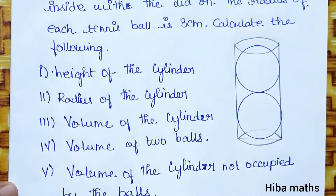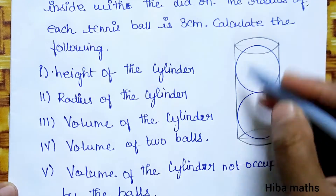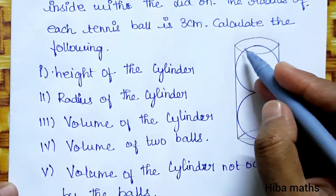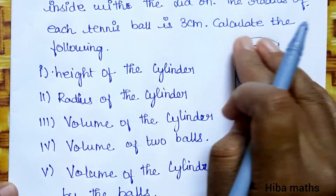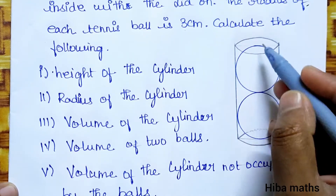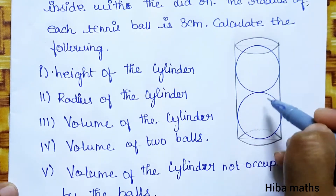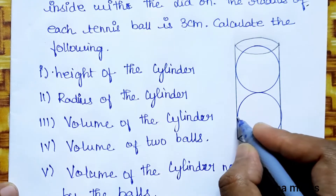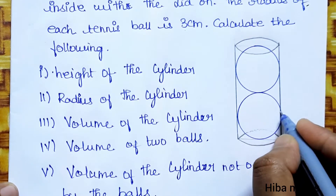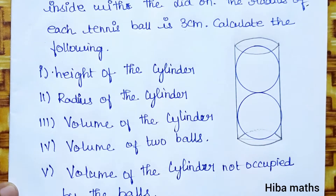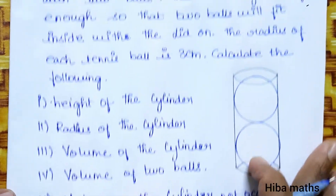So inside the diagram we have a cylinder with the lid closed. Inside it, exactly two balls fit — meaning the ball's radius and the cylinder's radius are equal. That is what we need to understand from this.